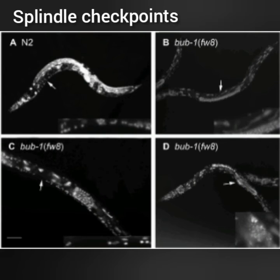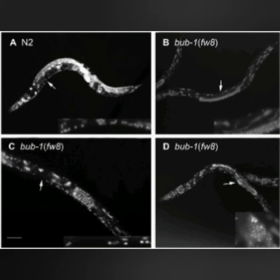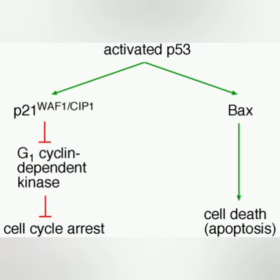Another tumor suppressor gene is BUB1, which is involved in spindle checkpoints. There is also the BAGS gene, which plays a role in apoptosis, and mutations in BAGS may result in causing carcinoma and sarcoma.